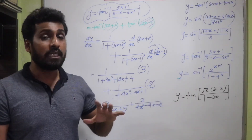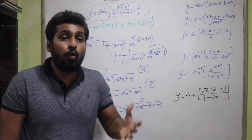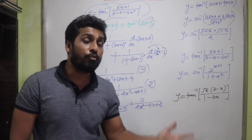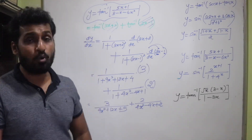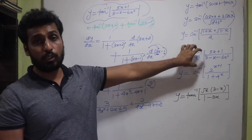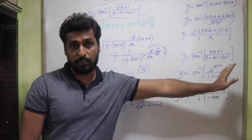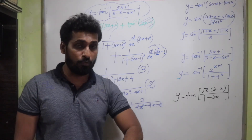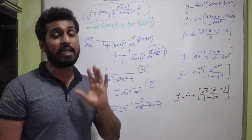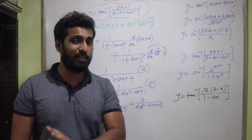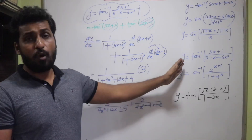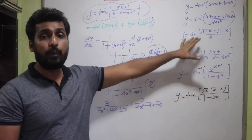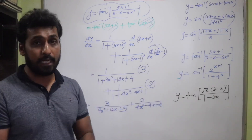Not always will a standard substitution help — sometimes other formulas and techniques are needed. That is what we applied for y = tan⁻¹((5x+1)/(3−x−6x²)). Make sure you have noted down the entire solution.